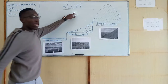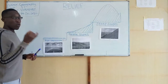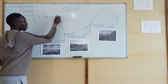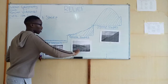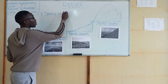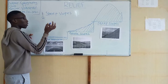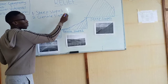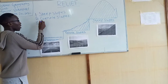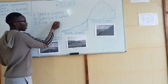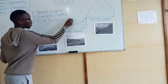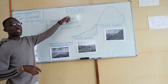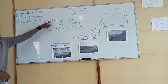Under relief, we are going to talk about three things. The first one is steep slopes, the second one is gentle slopes, and the third one is flat land. These are the three things we are going to learn today.